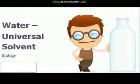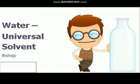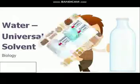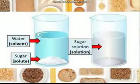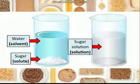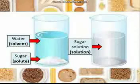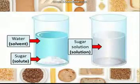Water is called a universal solvent because it can dissolve many things in it. When a substance is dissolved in water, it forms a solution. The substance that dissolves is called a solute, and the substance in which the solute dissolves is called a solvent. The resulting mixture is called a solution.